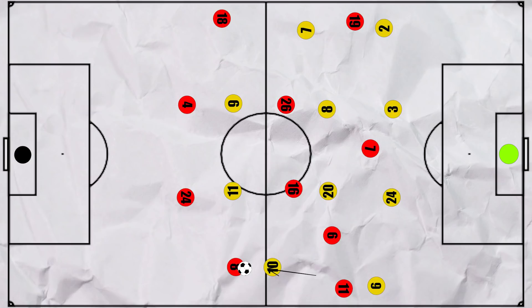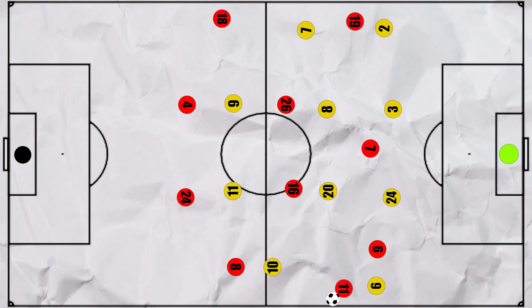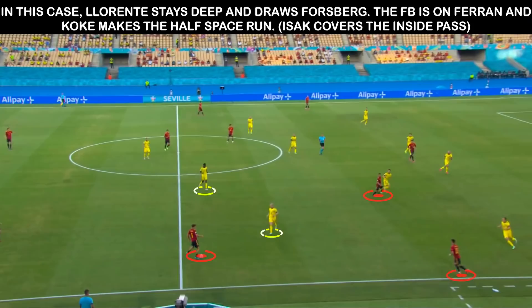Koke receiving deeper would often draw Forsberg into the press, and if the Sweden pivot was occupied with trying to prevent the ball infield, as the front two had been bypassed, it would mean that Augustinsson was two-vs-one down. Llorente would often make the run into the half space and could look to get on the end of a chip ball, which did lead to some interesting situations.